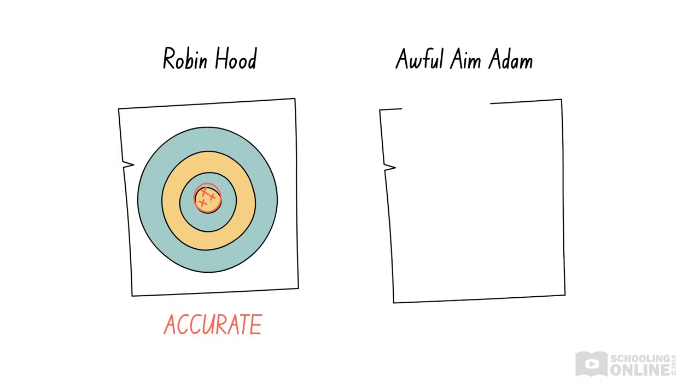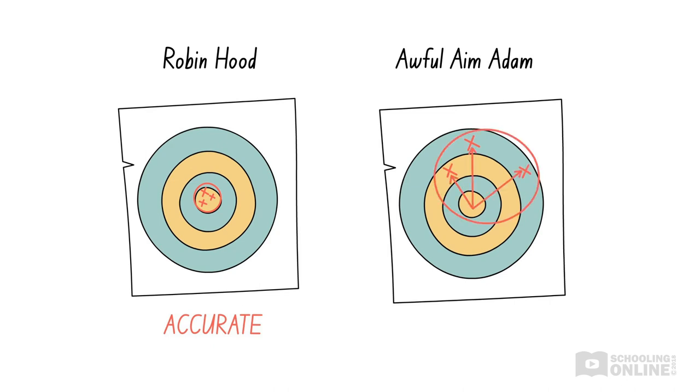On the contrary, if we are inaccurate, like Awful Aim Adam, then our experimental values will be, overall, far away from the true value.